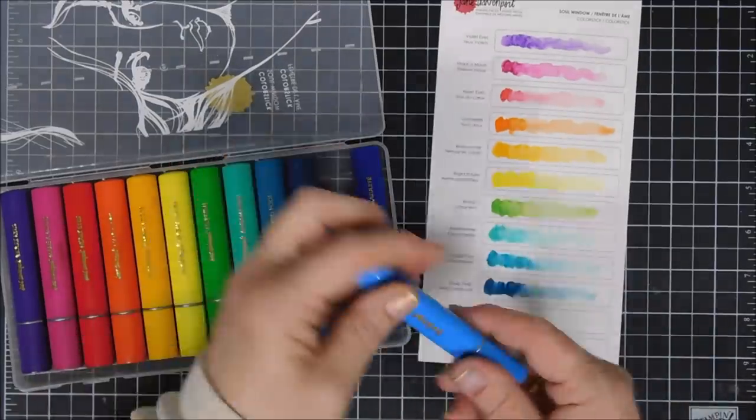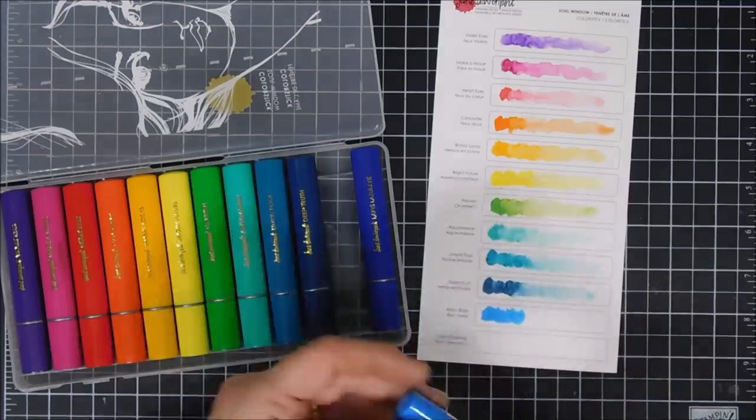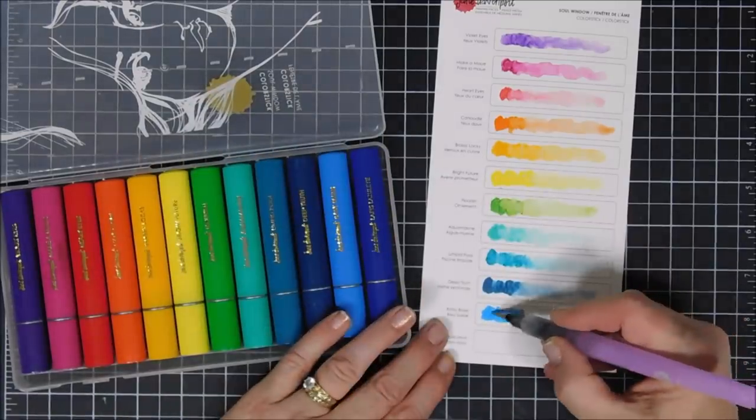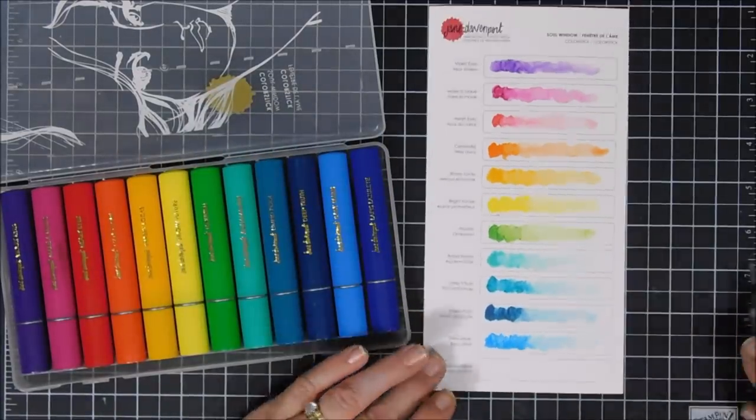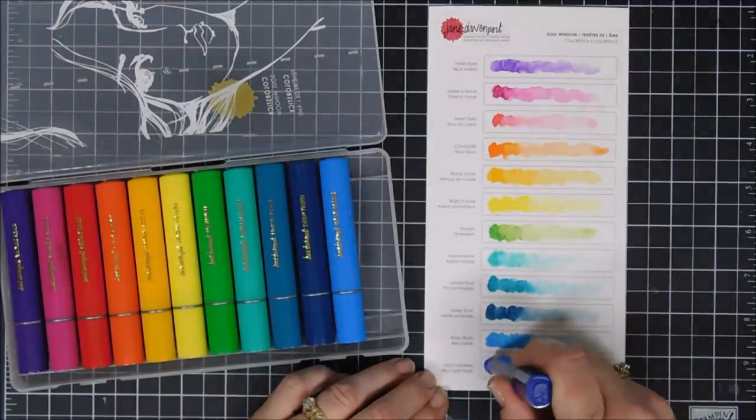And then the darkest one I'm just doing now is called Deep Truth. Beautiful colors. The colors that I shared with you are the colors that I'm going to use for my project today, and I am going to add a little bit of green in there. The green is called Flourish.